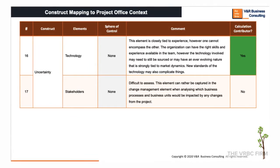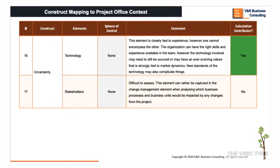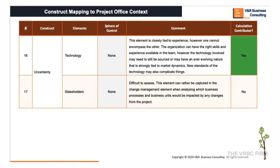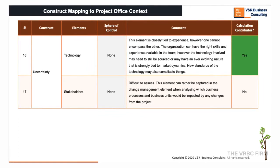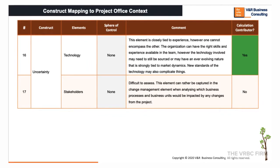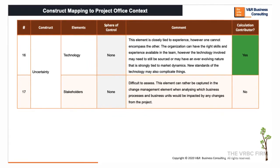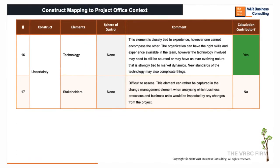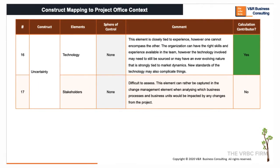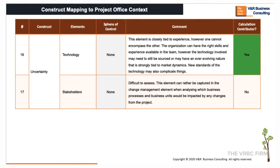Uncertainty in relation to stakeholders should be expected — that expected 20% we spoke about earlier. However, one cannot know what they do not know, so this element is difficult to assess. It could be better captured in the change management element, where the extent to which key functions and processes requiring change as a direct result of the project will be assessed. This assessment might indicate the likelihood of new stakeholders appearing at a later stage relative to the ideation stage.